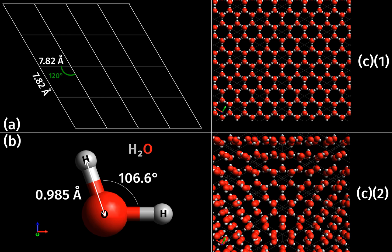The crystal structure consists of the same group of atoms, the basis, positioned around each and every lattice point. This group of atoms therefore repeats indefinitely in three dimensions according to the arrangement of one of the Bravais lattices. The characteristic rotation and mirror symmetries of the unit cell is described by its crystallographic point group.